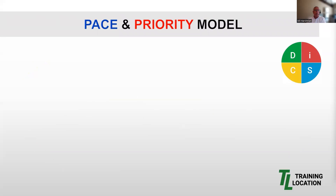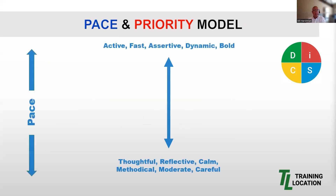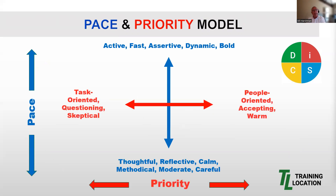Let's begin by taking a look at our pace and priority model. It is the essential tool for preliminary diagnosis, discussion, and understanding DISC styles and their relationship to each other. The vertical axis represents pace, where we see the descriptors at the top and bottom of that pace continuum. The horizontal represents priority, and we see those descriptors at the left and right of that priority continuum. As we look at this simple grid, we can begin to make unique pace and priority pairings into each quadrant.